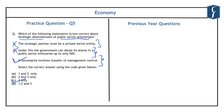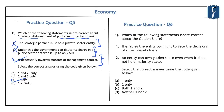Strategic disinvestment is very important for the preliminary examination because it has been one of the key decisions of the government of India for raising revenue while improving innovation in public sector enterprises. The sixth question is related to another important aspect of disinvestment — the concept of the golden share.